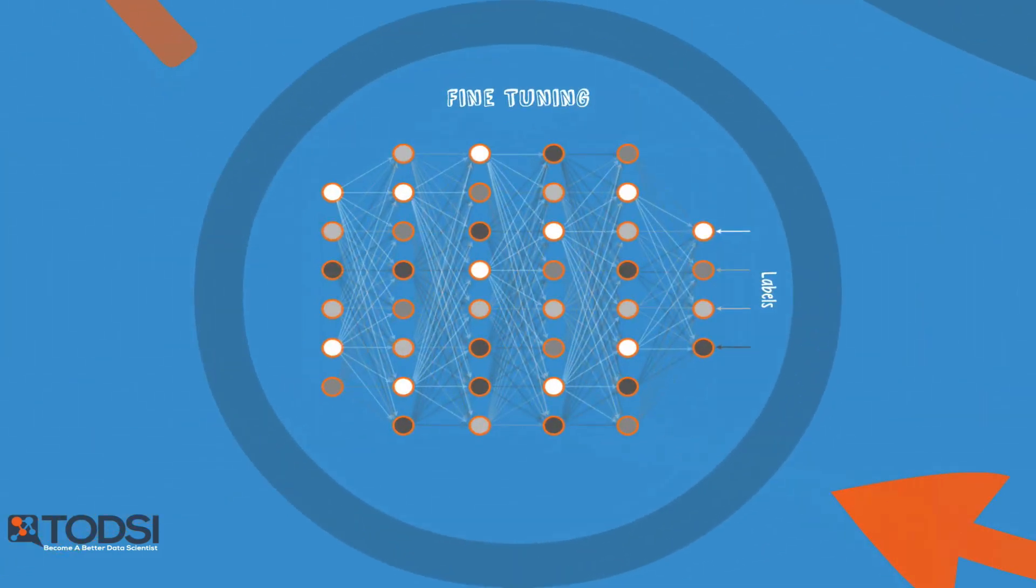After this initial training, the RBMs have created a model that can detect inherent patterns in the data. But we still don't know exactly what the patterns are called. To finish training, we need to introduce labels to the patterns and fine-tune the net with supervised learning.